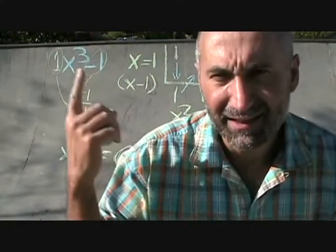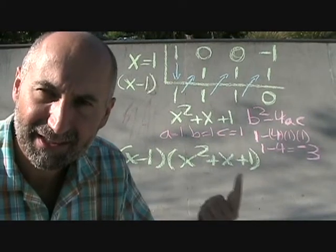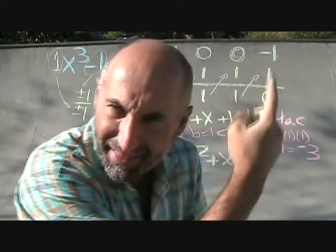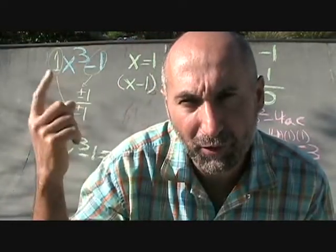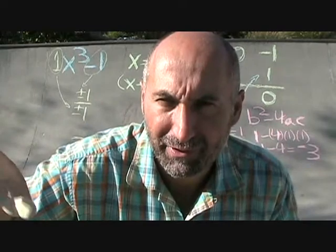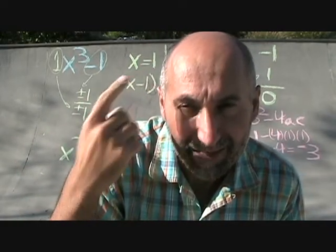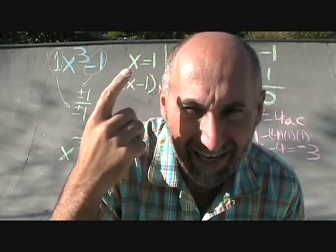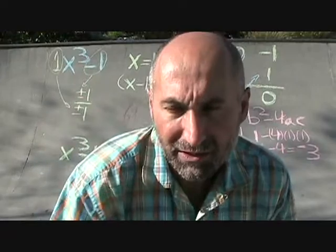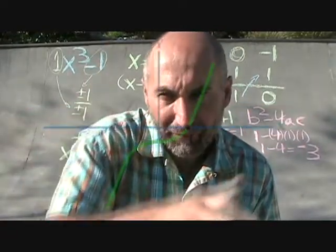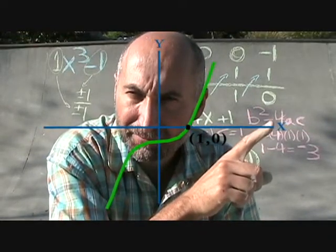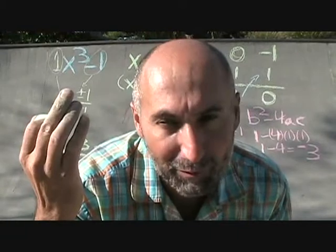So the final factored form of x cubed minus 1, as far as we can go in the real number realm, is x minus 1 times x squared plus x plus 1. If we went into complex or imaginary numbers we could factor further, but not here. This also tells us the x-intercept: when x equals 1, y equals 0 — that's where this function crosses the x-axis. Now let's do one that's a little more complicated.